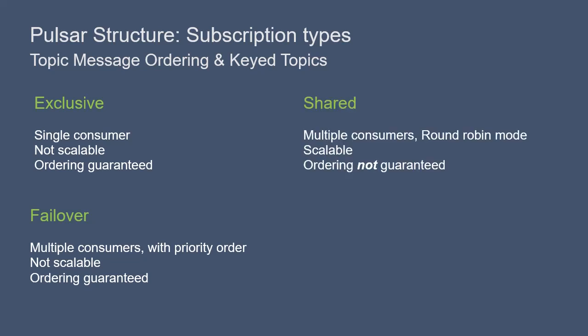In the shared subscription, which is also referred to as round-robin mode, multiple consumers are allowed to read messages from a broker at the same time. Messages are delivered to the consumers in a round-robin fashion, and any given message is delivered to only one consumer. If the consumer for a particular message disconnects before acknowledging receipt, the message will be re-sent to one of the remaining consumers. With the shared subscription, ordering is not guaranteed, but it's a lot more scalable than the Exclusive or Failover subscriptions.